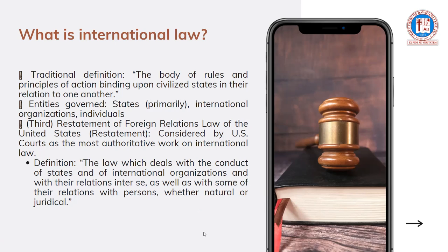What are the entities governed under international law? It primarily governs states, international organizations, and individuals — the actors in the international community. When we say states, remember the four elements: people, territory, government, and sovereignty. International organizations are entities agreed upon by member states in order to achieve a certain purpose.